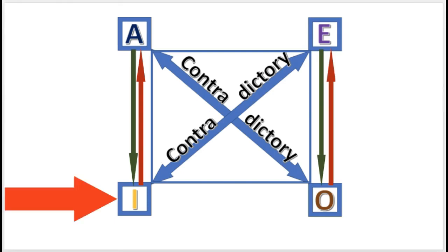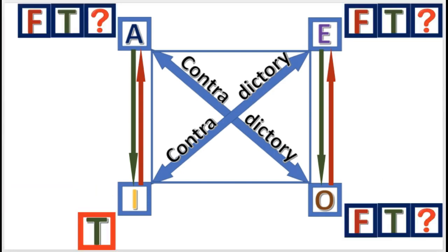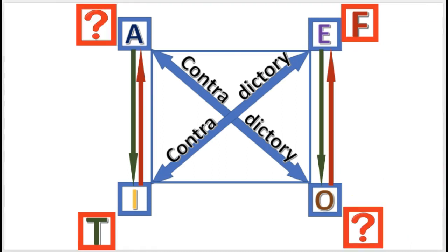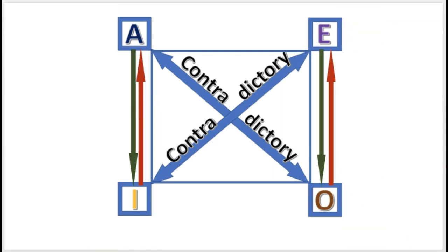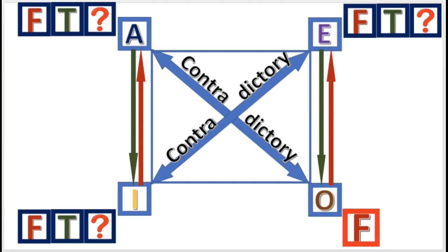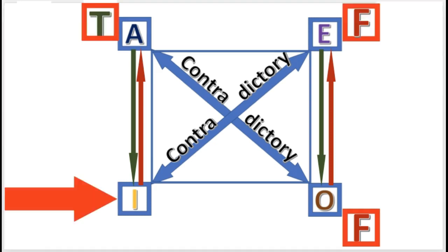Next practice problem: If I is true, what are the other truth values? E is false, and A and O are undetermined. Next practice problem: If O is false, what are the other truth values? A is true, E is false, and I is true.